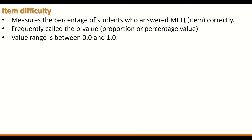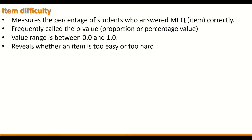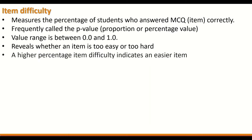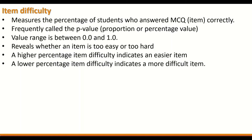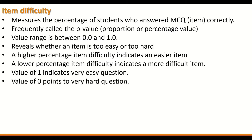The item difficulty value ranges between 0 and 1. It reveals whether an item is too easy or too hard. A higher value indicates an easier item and a lower value indicates a more difficult item. A value of 1 indicates a very easy question, and a value of 0 points to a very hard question.